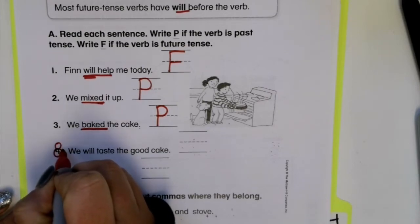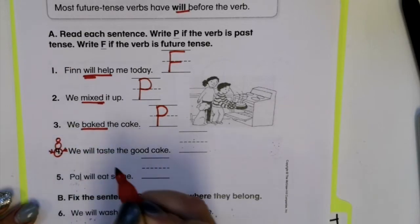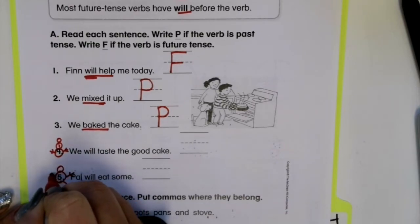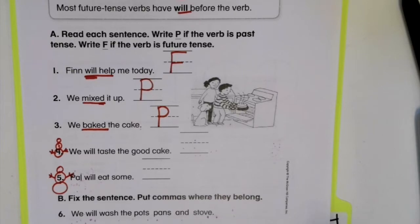Number four, you're going to go ahead and put a little snowman. And number five, you're going to put a snowman. Because those two you're going to do yourself. I'll read you the sentences and you're going to underline the verb and put a P or an F. We will taste the good cake. Underline your verb and put a P if it's past tense and an F if it's future. And number five, pal will eat some. Underline your verb and put a P or an F.